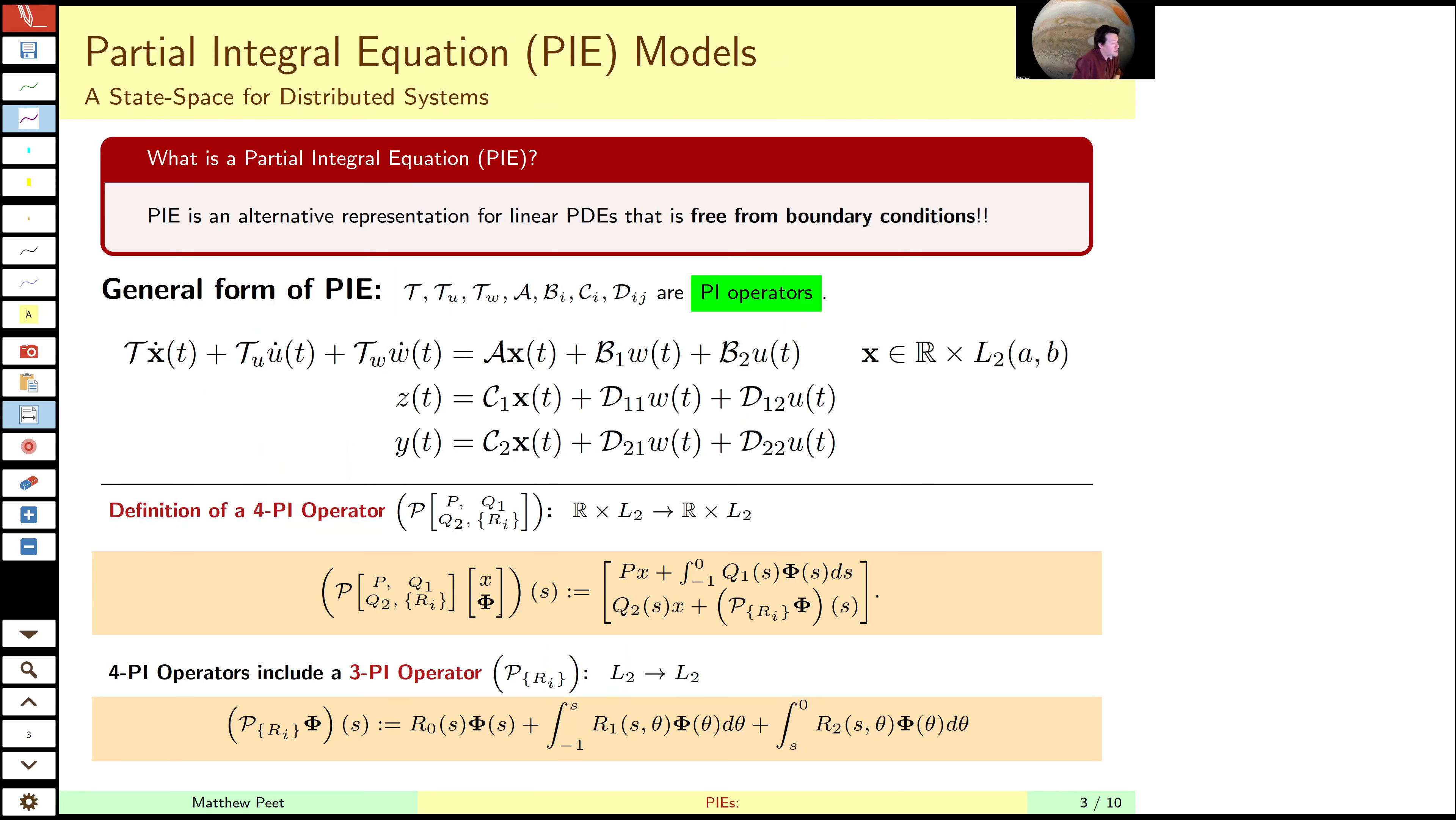The PI framework, partial integral equation framework, for modeling these systems is an alternative representation to the PDEs which are defined by spatial derivatives. It's defined critically by nine operators, nine parameters. These parameters are all bounded linear operators, and most importantly, they form an algebra.